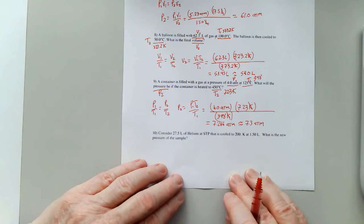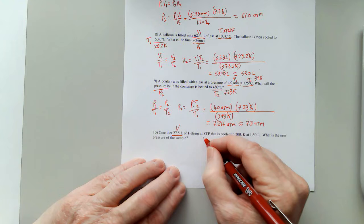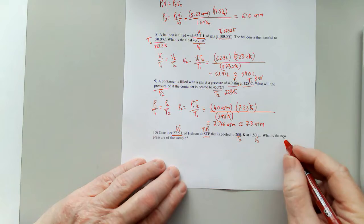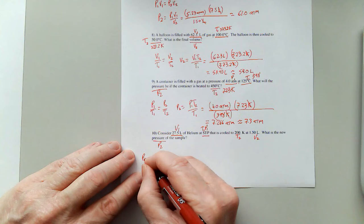Number 10, our last one here. 27.5 liters is a volume of helium at STP, temperature pressure. We can call those state 1 because of that word at. It's cooled to 200 Kelvin, T2, 1.5 liters, V2. What's the new pressure? We'll call that P2.